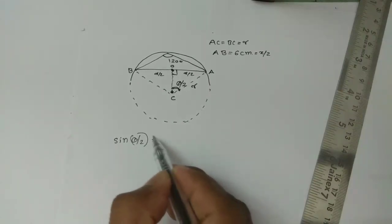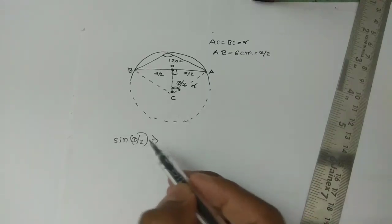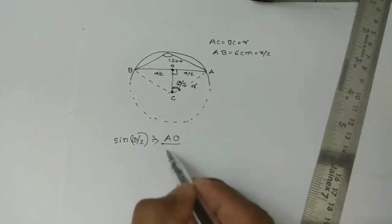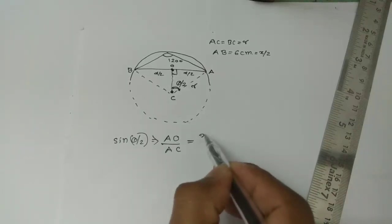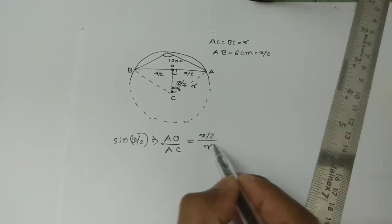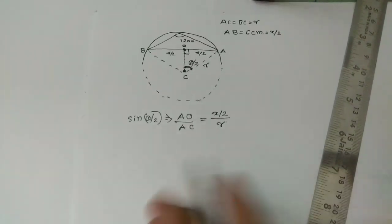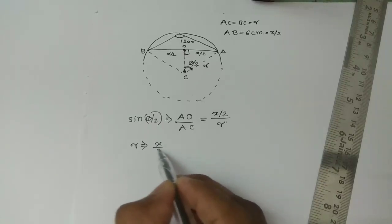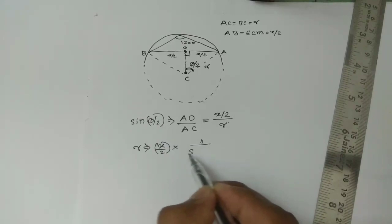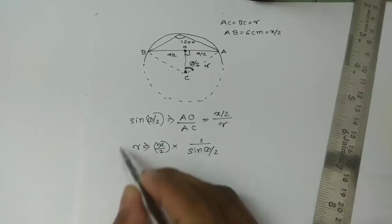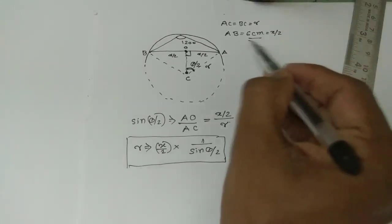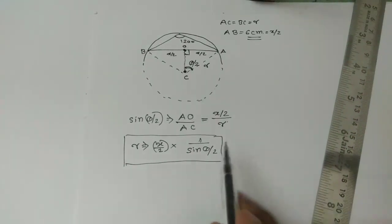Sine theta by 2 is equal to - our formula is opposite side divided by hypotenuse. The opposite side is AO divided by AC. AO is equal to x by 2. AC is equal to r. So r is equal to x by 2 divided by sine theta by 2. AO is equal to x by 2, which is equal to 6 cm divided by 2. But theta is equal to 60 degrees.